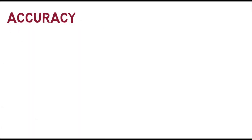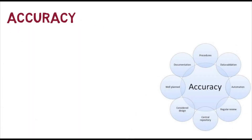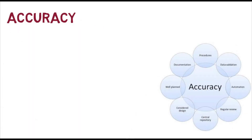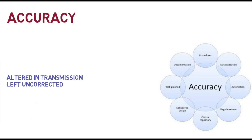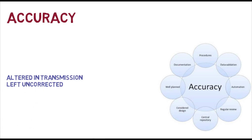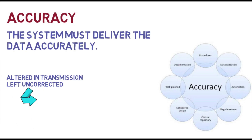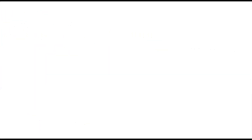Accuracy: the system must deliver the data accurately. Data that have been altered in transmission and left uncorrected are unusable.